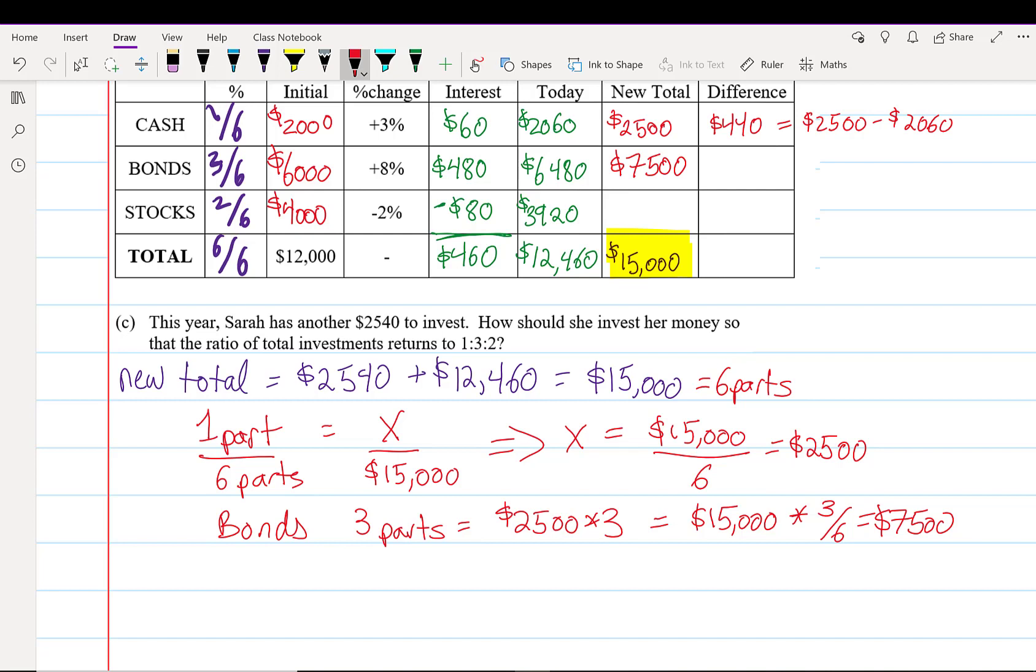For stocks, we're going to take $2,500 × 2 and end up with $5,000. We check: when we add those together ($2,500 + $7,500 + $5,000), it actually does equal $15,000.